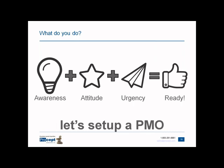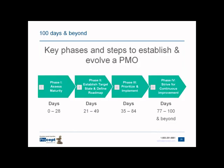With that framework and mindset in place, you are ready to set up a PMO. The key phases are: Phase one — assessing the maturity. Phase two — establishing target state and defining the roadmap. Phase three — prioritizing and implementing. Phase four — striving for continuous improvement. Underneath each phase, I've identified the number of days you should take for each. Know that this is a guide, not a recipe.